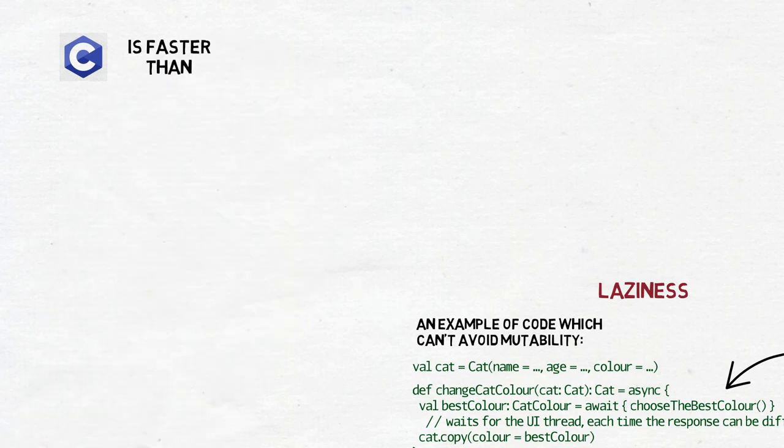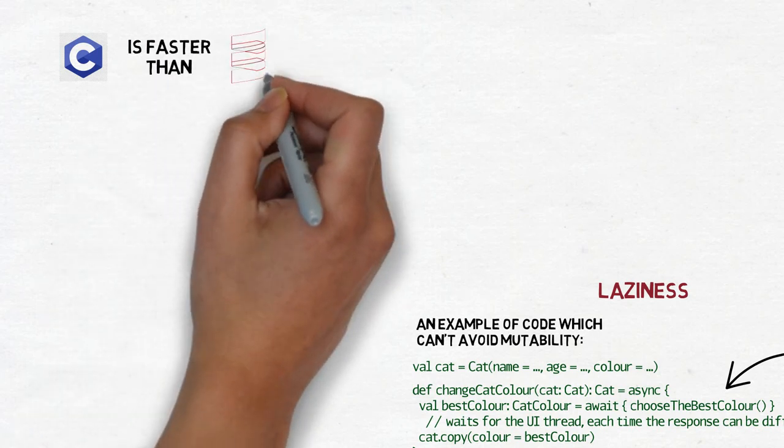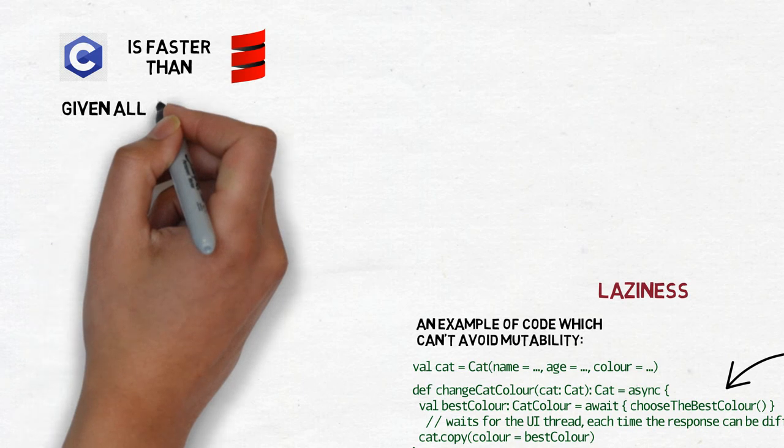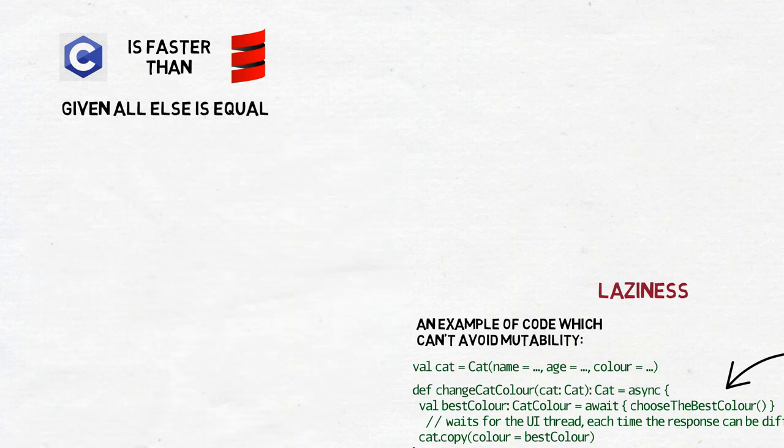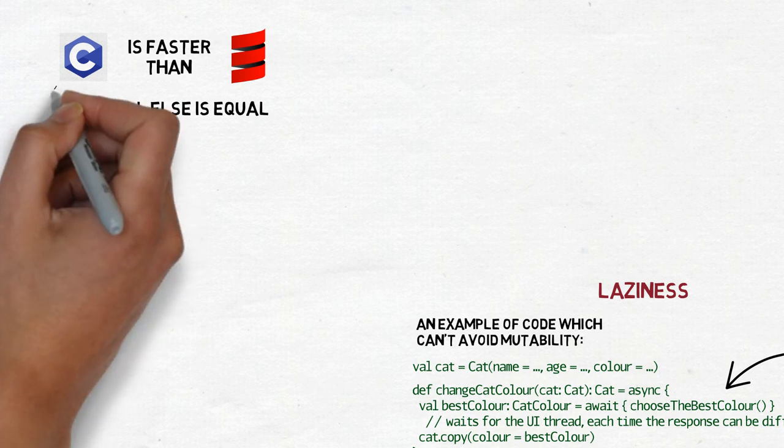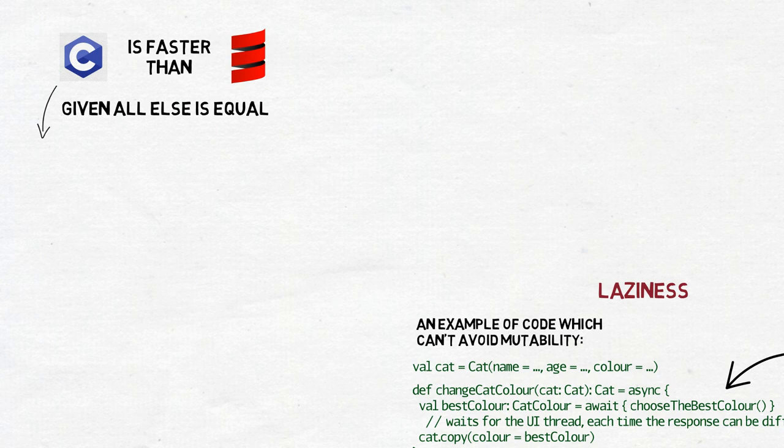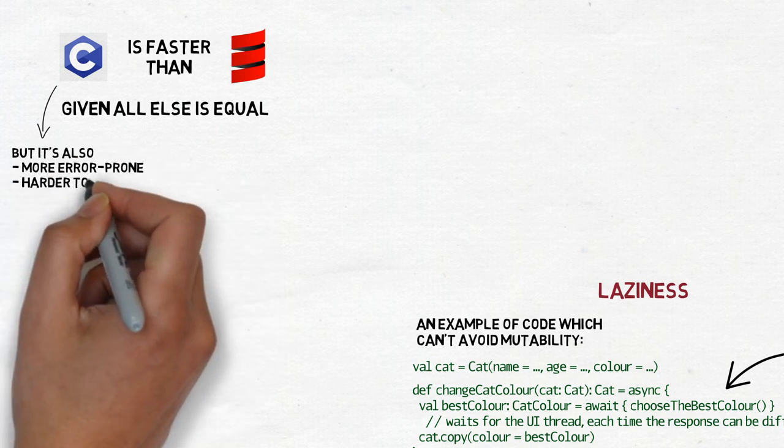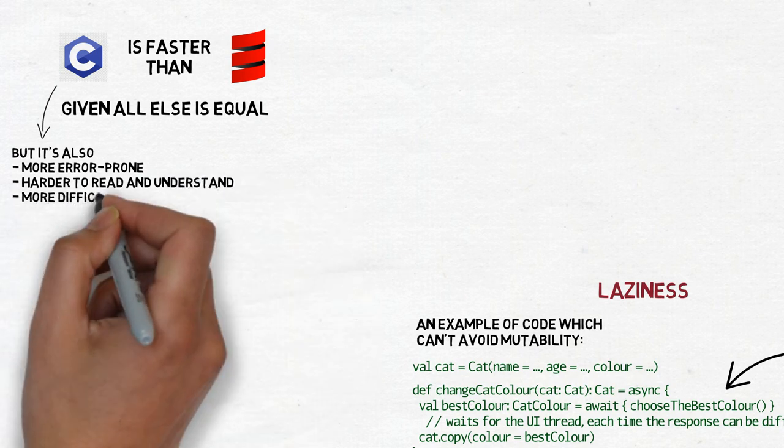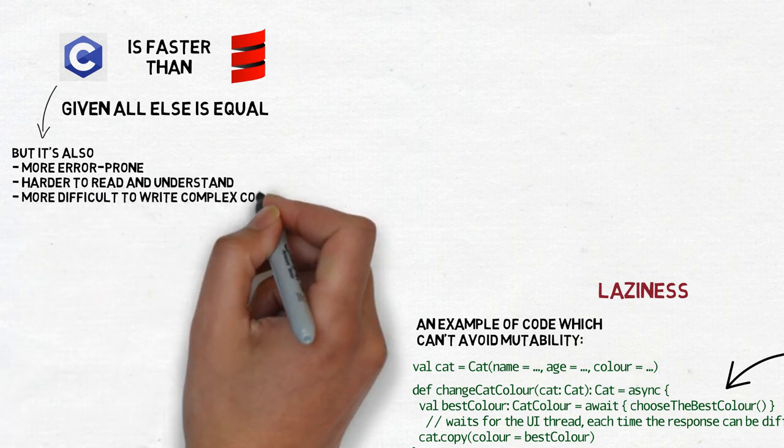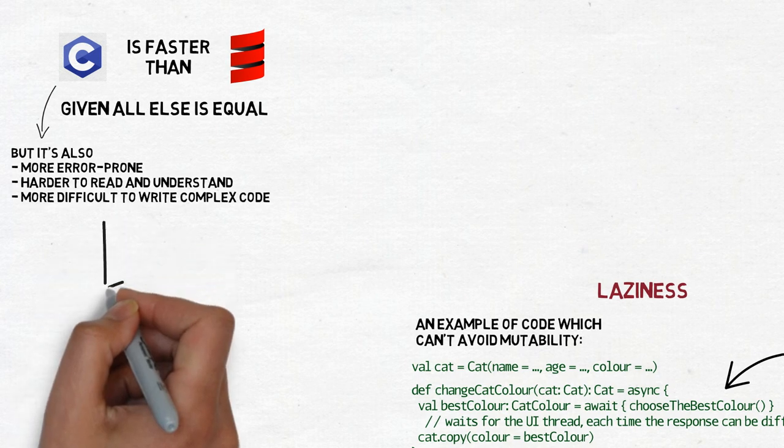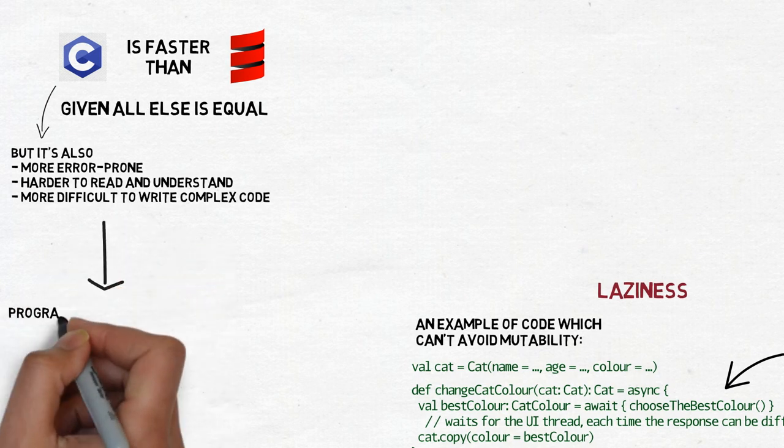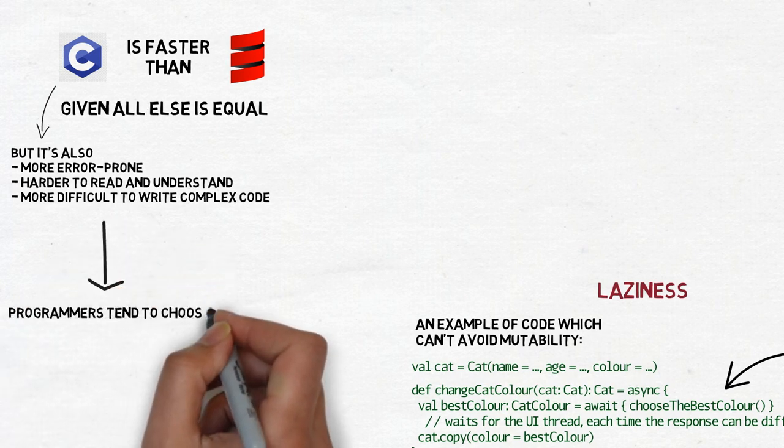It is a truth universally acknowledged that a low-level language is more performant than a higher level, more abstract and functional one. When we compare the same algorithm, for example sorting, written in two languages, the one written in C or C++ will work faster than the one written in Scala or Haskell. But the keyword here is same. Sorting, just as many other operations, may have simpler and more complex implementations.